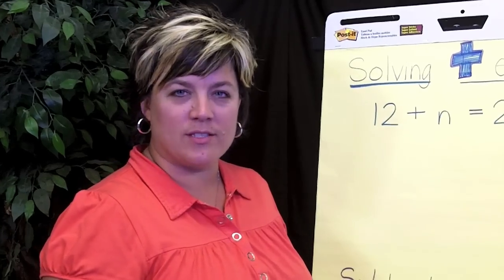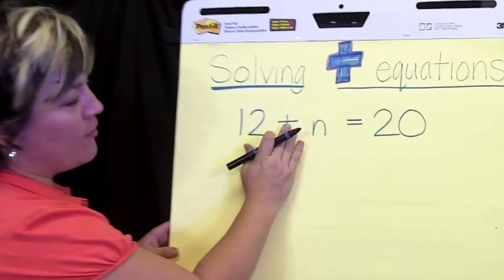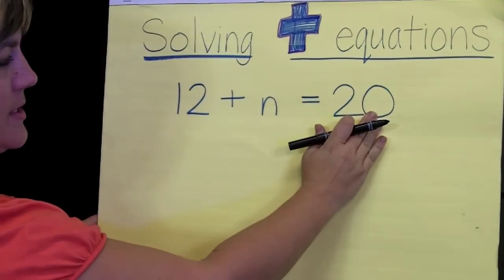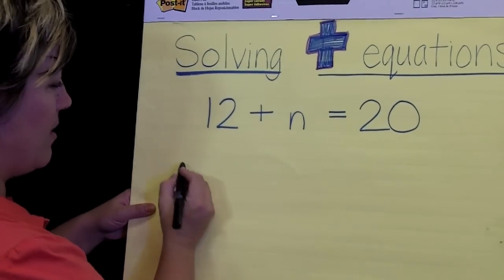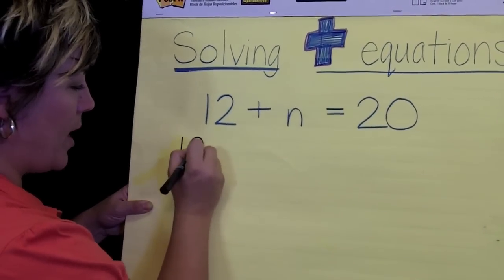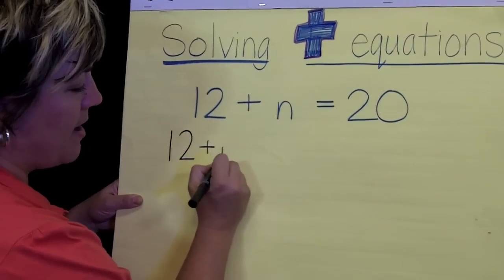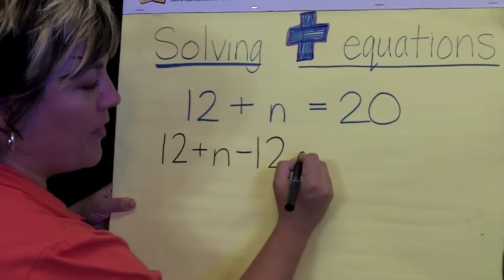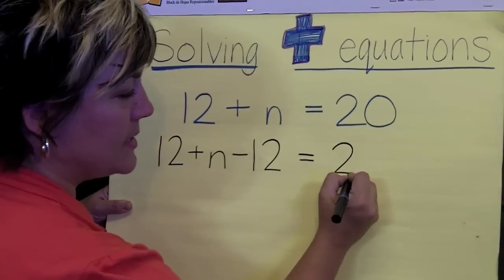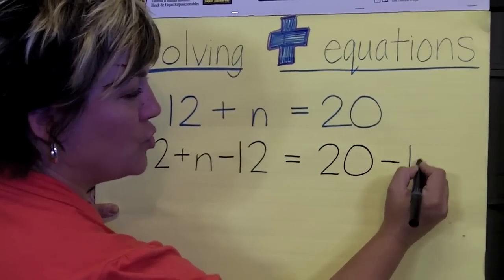So let's go ahead and see what this looks like on paper. We've got 12 plus n equals 20. I'm going to go ahead and subtract the 12 like I did in the balance scale. So I'm going to write down 12 plus n minus 12. On the opposite side, I had 20, and I also subtracted 12.